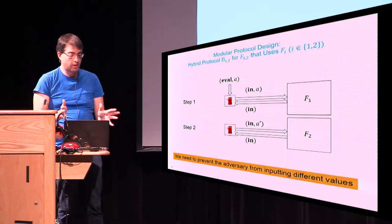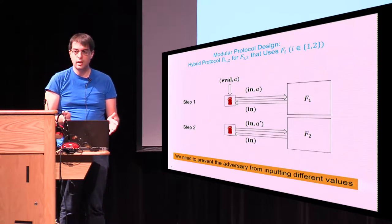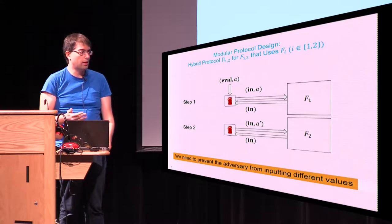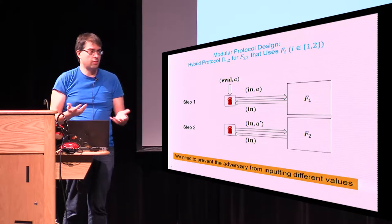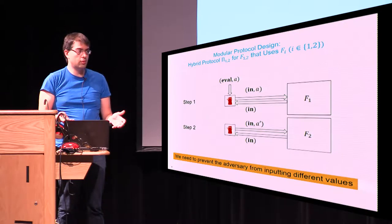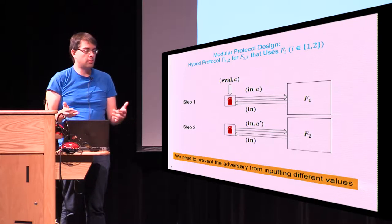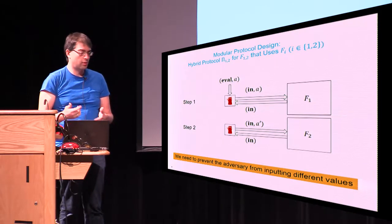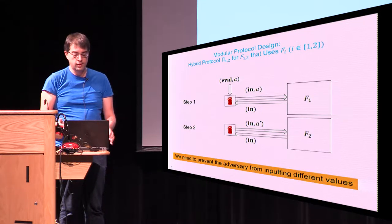The reason it is not secure is the following: if party P is adversarial, if it is corrupt, then it can send different inputs to functionality F1 and F2. F1 and F2 have no way of checking whether P has sent them different inputs, and party Q cannot do that either. We need a mechanism to ensure that different functionalities receive the same input.